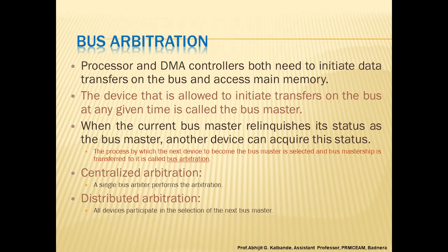The device that is allowed to initiate the transfer on the bus at any given time is called the bus master. When the current bus master relinquishes its status, another device can acquire it. The process by which the next bus master is selected is called bus arbitration. There are two types: centralized arbitration, where a single bus arbitrator performs arbitration, and distributed arbitration, where all devices participate in selecting the next bus master.